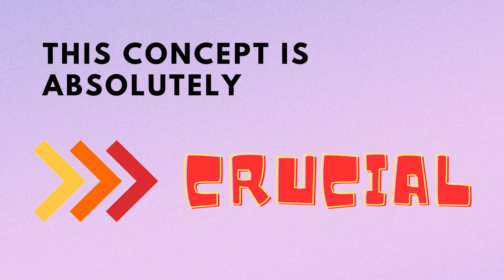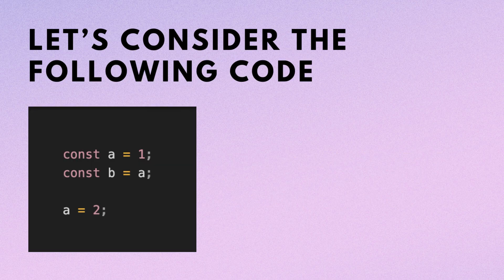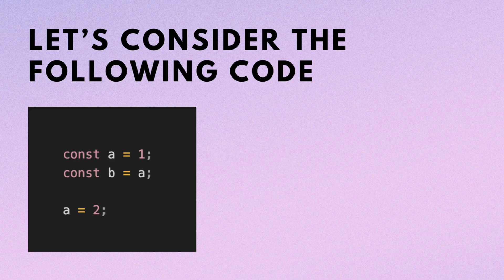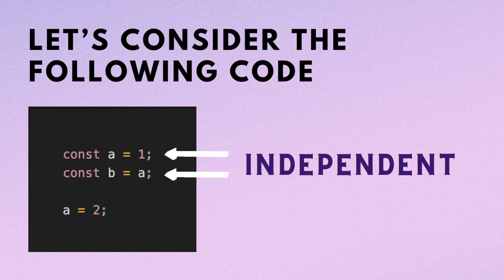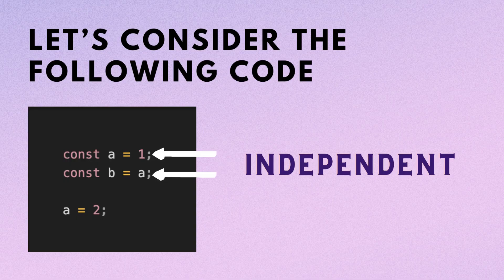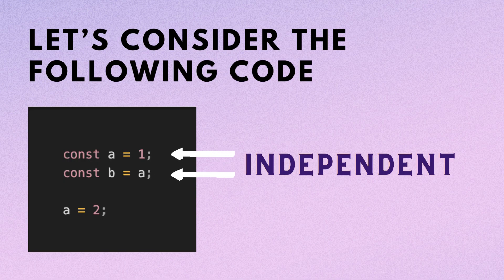Let's consider the following code. After the first two lines, we have two separate variables with the same value. These variables and values are independent. This means if we modify variable a, as on line 4, variable b remains unaffected. This behavior is consistent for all primitive data types in JavaScript.